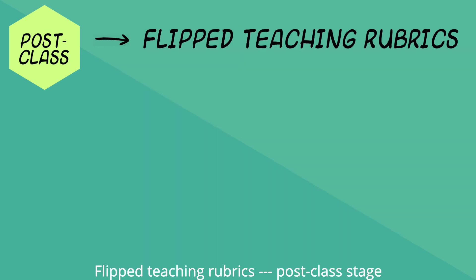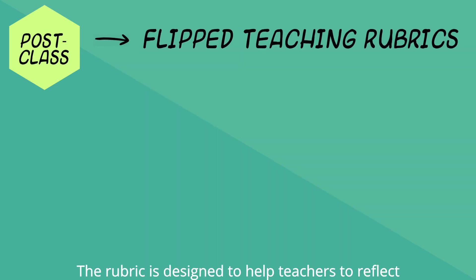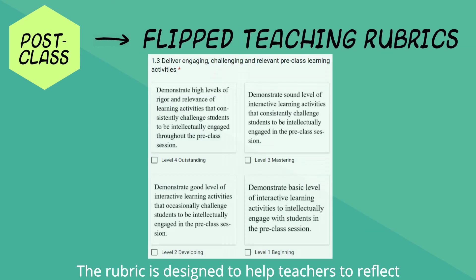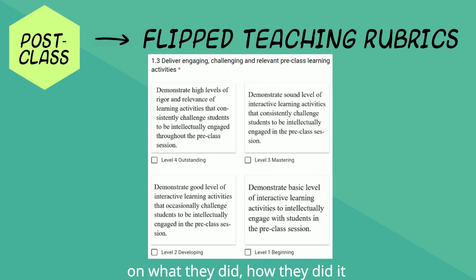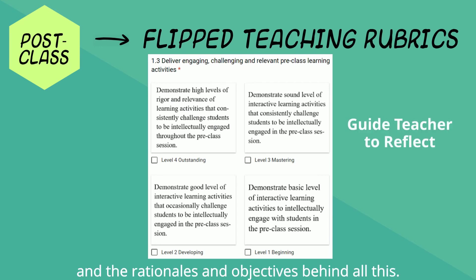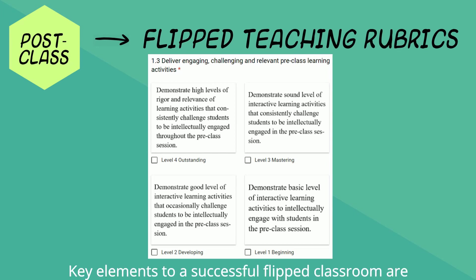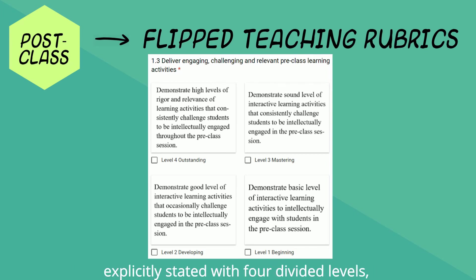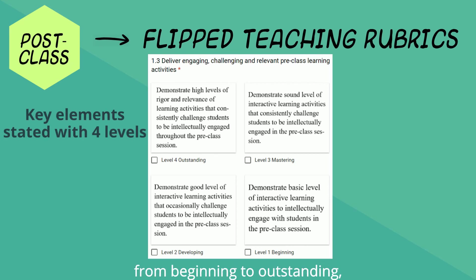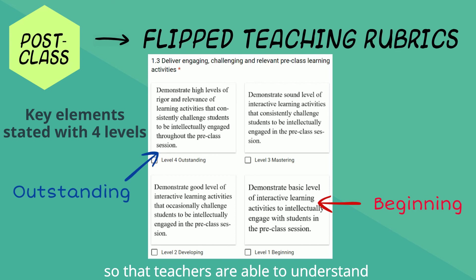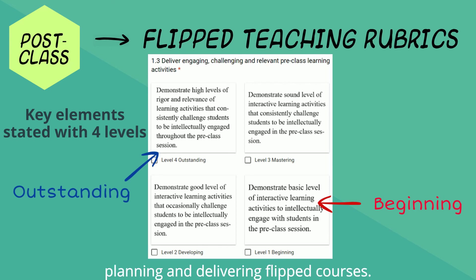Flip teaching rubrics: The rubric is designed to help teachers to reflect on what they did, how they did it, and the rationales and objectives behind all this. Key elements to a successful flipped classroom are explicitly stated with four divided levels, from beginning to outstanding, so that teachers are able to understand what they are expected of in planning and delivering flipped courses.